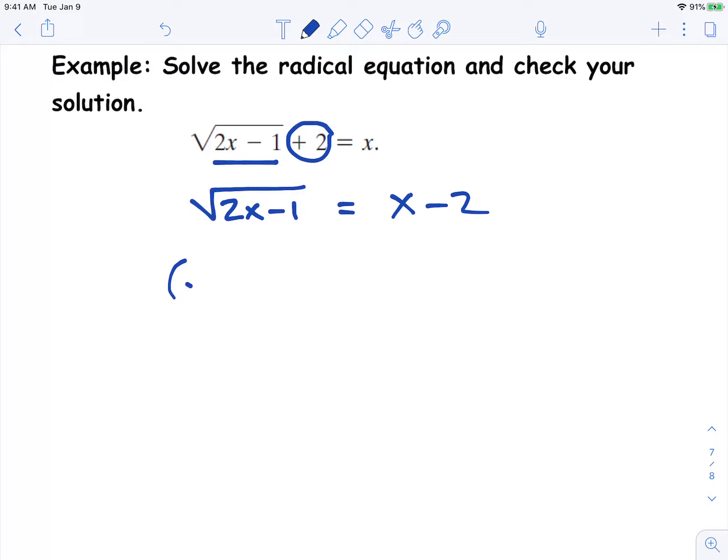Now we're going to undo this square root on the left side by squaring both sides. So what happens is this square root and this squared cancel out, and we're left with a radicand of 2x minus 1. On the right we have a binomial that is squared, so we have to write it as two separate binomials and we're going to have to FOIL.